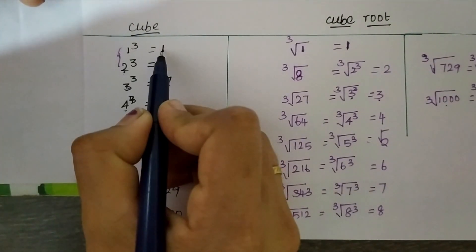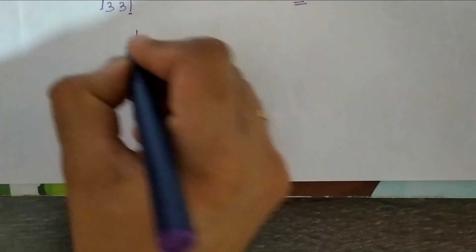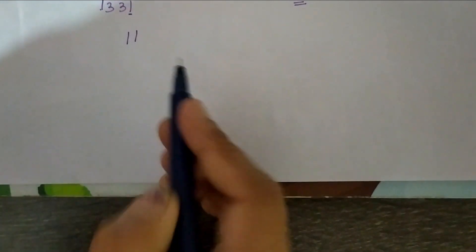Similarly, 1 cubed is 1. 1 is the cube of 1. So, cube root of 1331 is 11.